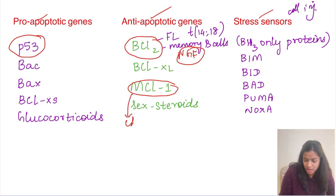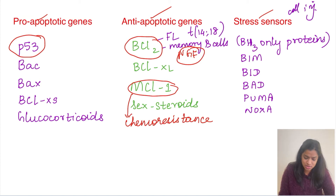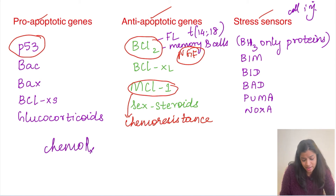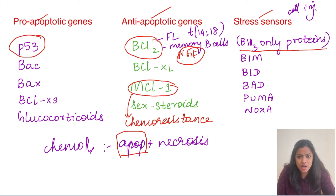MCL1 is another anti-apoptotic gene that confers chemotherapy resistance to tumor cells. Tumor cells sometimes resist chemotherapy — a bad outcome for the patient. This chemo resistance occurs because tumor cells start expressing MCL1, an anti-apoptotic factor, so the cells cannot die by apoptosis. MCL1 is responsible for chemo resistance of tumor cells. Note: chemotherapy can trigger both apoptosis and necrosis, but apoptosis is the most important. The stress sensors are BH3-only proteins: BIM, BID, BAD, PUMA, and NOXA.